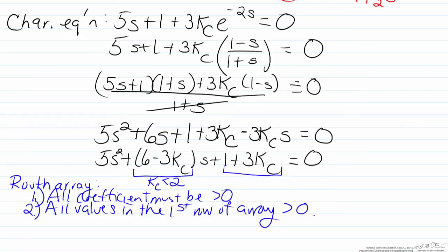this will only be positive when Kc is less than 2, otherwise the negative 3Kc term will dominate. And similarly for our constant term, this will only be positive when Kc is greater than negative one third. So we already at least have some beginnings of a limit for our function here. What we now want to do is use the Routh array to see if there are some further modifications to this range, which right now is between negative one third and two.